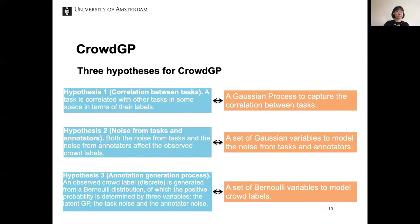For the CrowdGP model, we have three hypotheses. The first is about task correlation: we assume a task is correlated with other tasks in some space in terms of their labels, and we use a Gaussian process to capture this correlation. The second is about noise from tasks and annotators: we use Gaussian variables to model both noise sources. The third is about the annotation generation process: an observed crowd label is generated from a Bernoulli distribution whose positive probability is determined by the latent GP, the task noise, and the annotator noise.